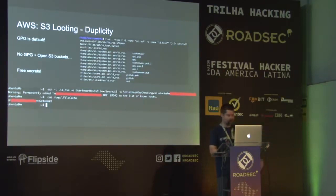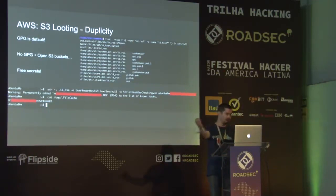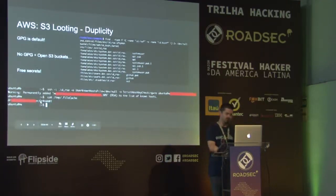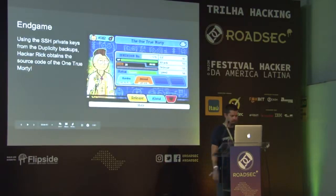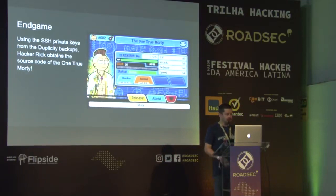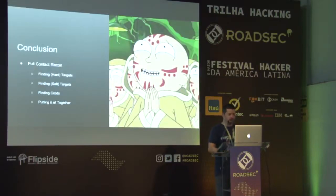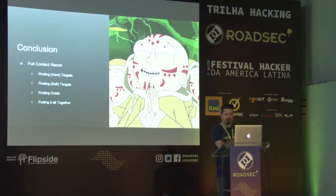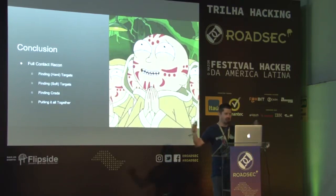This screenshot is from a web application with an authentication mechanism. I backdoored the source code on that web app and was able to dump credentials every time an engineer or developer logged in. So here is one of the sets of creds I was able to pull out. End game — we're using our looted secrets, and we now have the source code for the one true Morty. Full contact recon: finding the systems, finding the people that use the systems, and finding their credentials, all without sending traffic to the target infrastructure. Then once you connect, you have a shell, you have privileged access, and you get root everywhere.